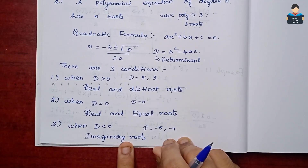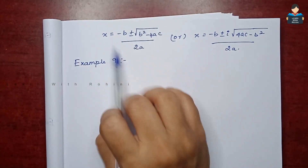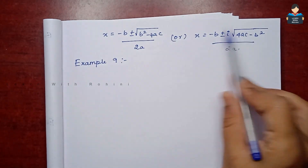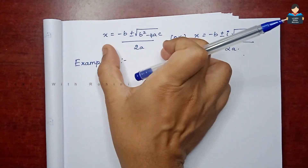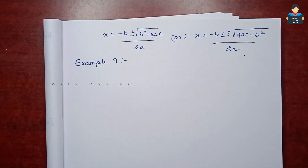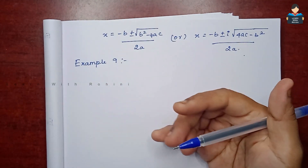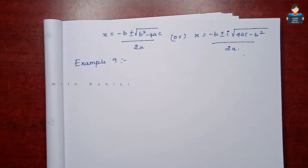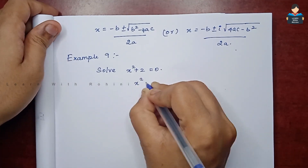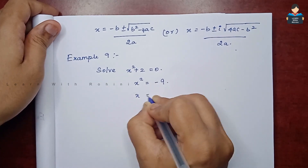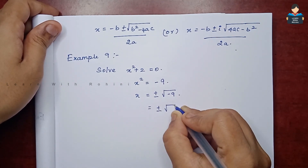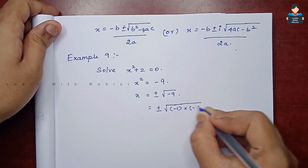Using the quadratic formula, we can solve equations with negative discriminant values. For Example 9: solve x² + 2 = 0. The solution gives x equal to plus or minus square root of minus 9, which equals plus or minus square root of minus 1 into 9.